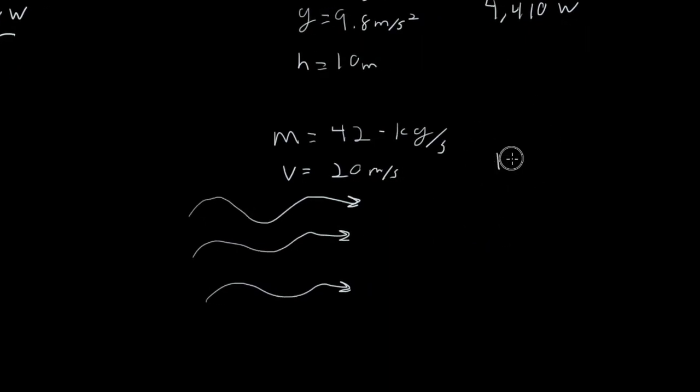And so that's just going to be my kinetic energy over time. I'm saying 42 kilograms per second, so I've got one-half mv squared per time. That's already taken care of by the 42. So one-half times 42 times 20 squared. That's going to be 8,400 watts. There we go.